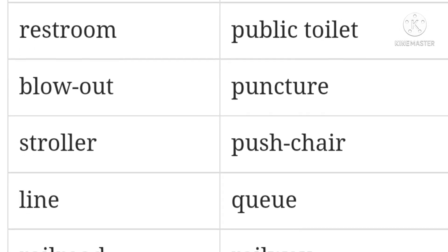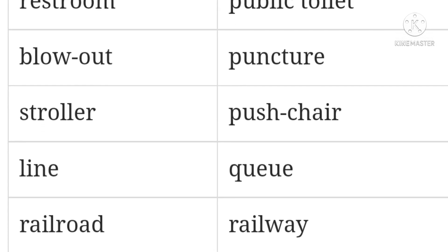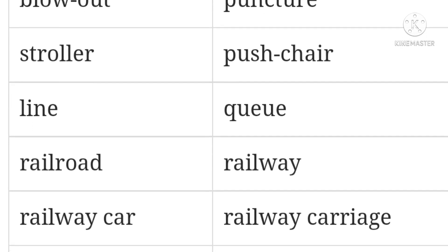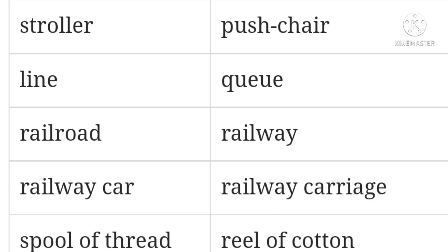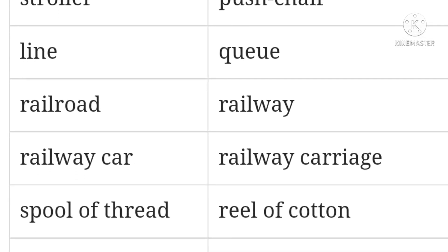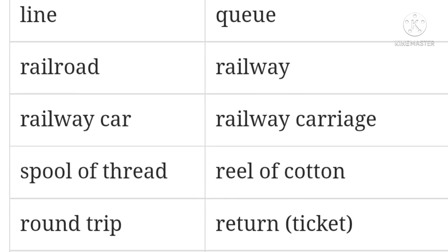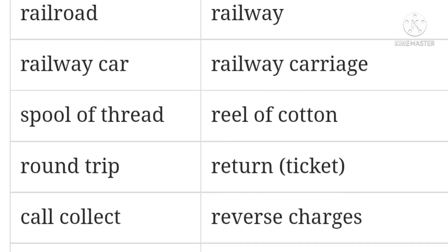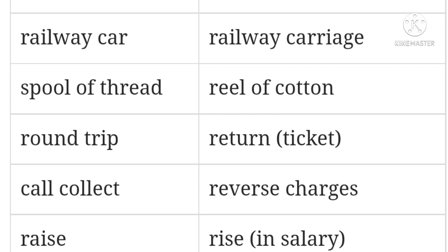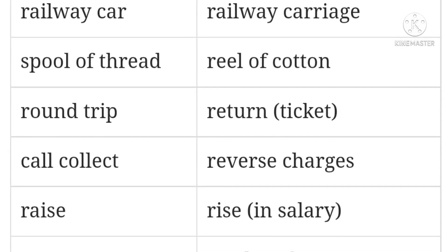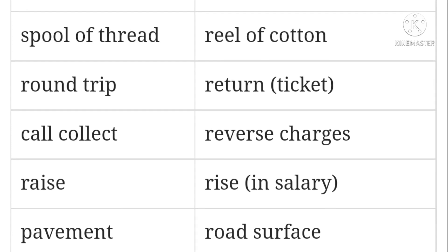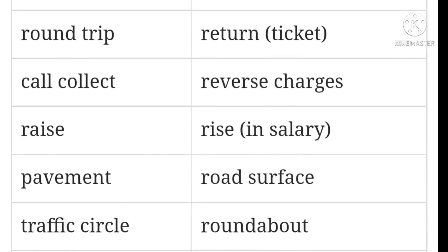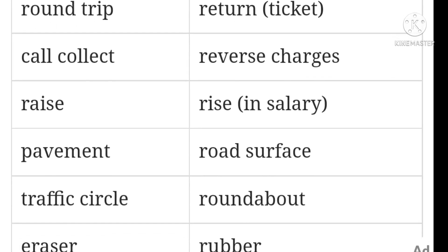Blowout / puncture. Stroller / pushchair. Line / queue. Railroad / railway. Railway car / railway carriage. Spool of thread / reel of cotton. Round trip / return ticket. Call collect / reverse service charges. Rise in salary / rise. Pavement / road surface. Traffic circle / roundabout. Eraser / rubber. Garbage / trash — rubbish. Sedan / saloon. Scotch tape / Sellotape. Store / shop.